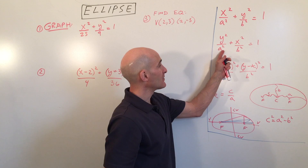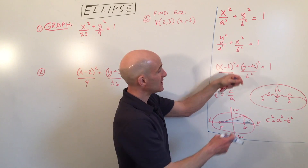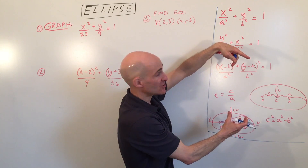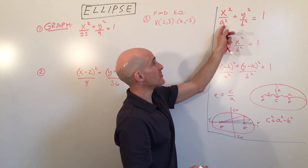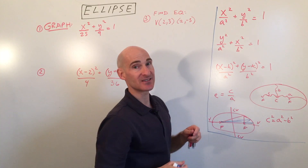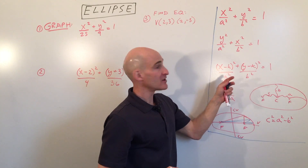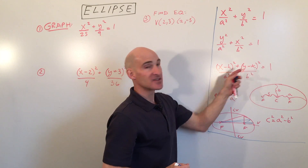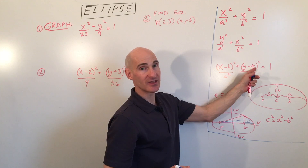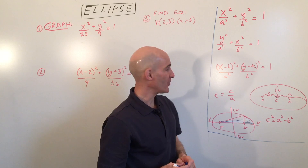If a squared is underneath the y — meaning the larger quantity is under y — the ellipse will be more elongated or stretched in the y direction. If the larger number is underneath x, it's going to be more elongated in the horizontal x-axis direction. Just like parabolas can be shifted, you can shift these ellipses using h and k, where h and k is the center of the ellipse. If there's no h and k, the center is at the origin.